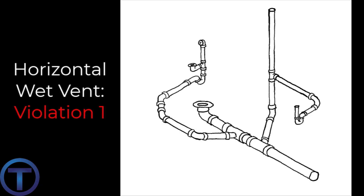Horizontal wet vent violations — these are mistakes that plumbers often make. You need to be aware of what not to do. Here's the first one: horizontal wet vent violation one. We have a wet-vented bathroom group with a tub, a toilet, and a lavatory. The wet vent extends from the lavatory downstream. The problem here is that the tub is connected upstream. The toilet can connect upstream because that is its individual connection to the wet vent, but the tub should not connect to the toilet arm.